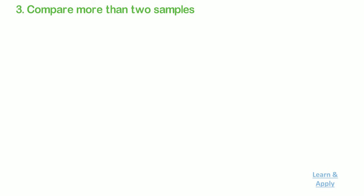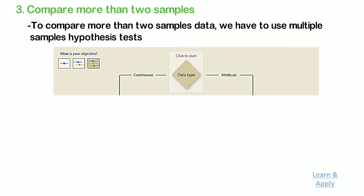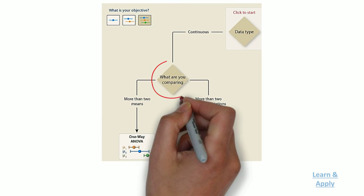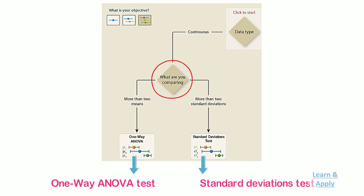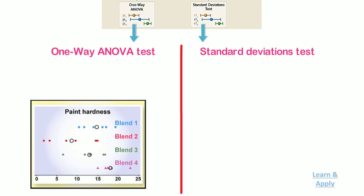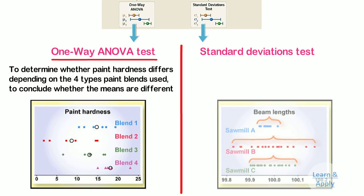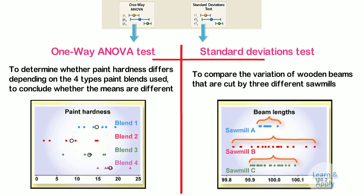The third type is: compare more than two samples. If you want to compare more than two samples of data, the tests used earlier will not be useful — we have to use multiple-sample hypothesis tests. Again, the first selection criteria is type of data. If the data is continuous, the second selection criteria is: what are you comparing? If you are comparing means for more than two samples, use the one-way ANOVA test. If you want to compare standard deviations for more than two samples, use the standard deviations test. For example, if a quality engineer wants to determine whether paint hardness differs depending on four types of paint blends, then he uses the one-way ANOVA test. Whereas if a distributor wants to compare the variation of wooden beam lengths cut by three different sawmills, then he uses the standard deviations test.